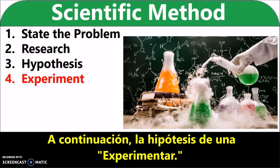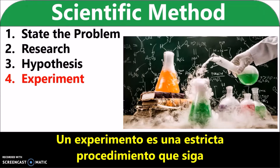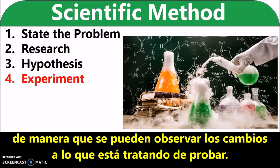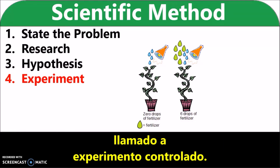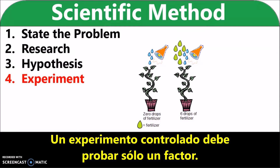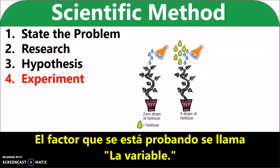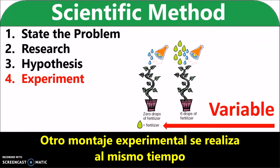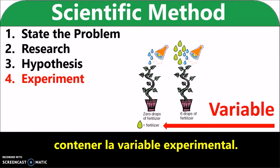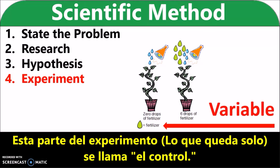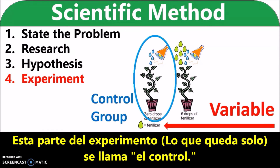Next, test the hypothesis with an experiment. An experiment is a strict procedure that you follow so that you can observe the changes to the thing you are trying to test. To test a hypothesis, the scientist designs an experiment called a controlled experiment. A controlled experiment must test only one factor. The factor that is being tested is called the variable. Another experimental setup is done at the same time with every condition being the same, except that it does not contain the experimental variable. This part of the experiment that is left alone is called the control.